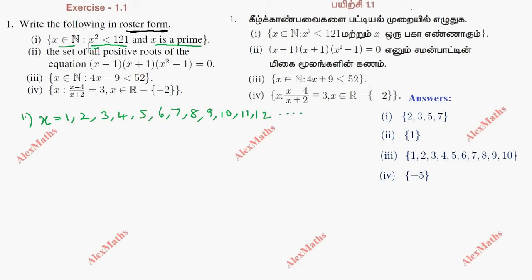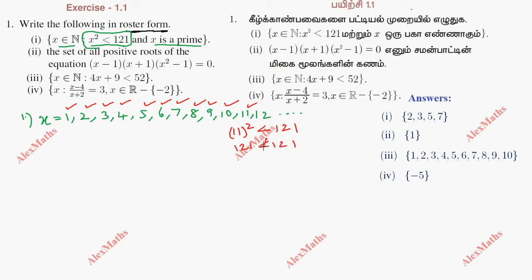Now x squared is less than 121. If we check the numbers: 1 squared, 2, 3, 4, 5, 6, 7, 8, 9, 10 — up to 11. But 11 squared is 121, which is not less than 121. So 121 is not less than 121, which means 11 is not required.